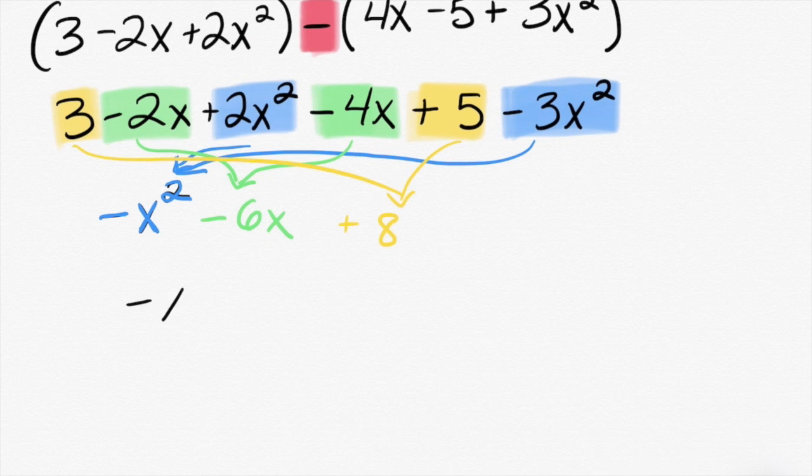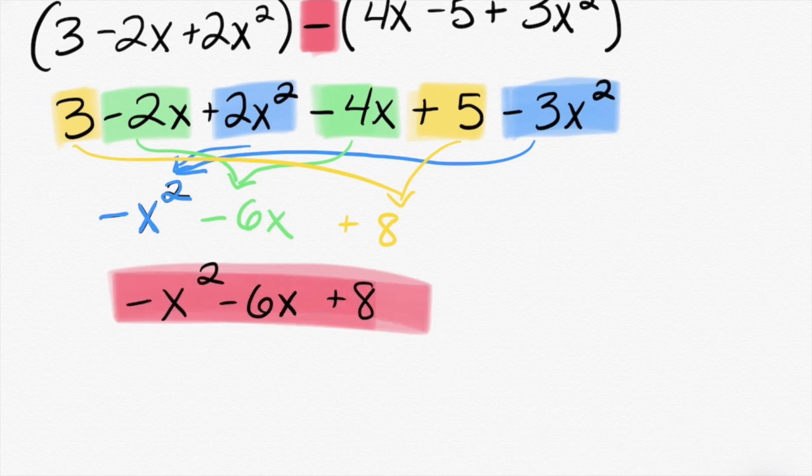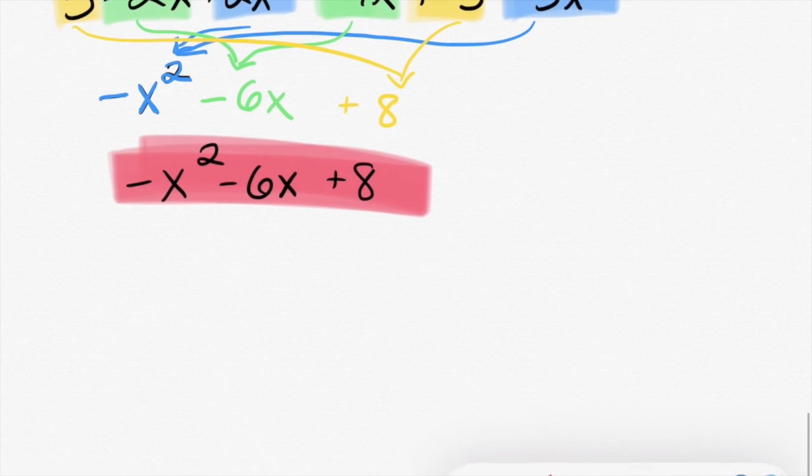So it would be negative x squared minus 6x plus 8. Is there anything else in this problem I can combine? No, because the negative 6x does not have an exponent of 2. Which means they have different degrees. Exactly right. Let's do one more together, and then I'll give you a handful to practice.